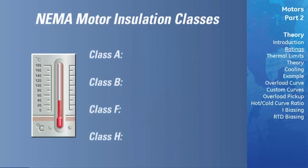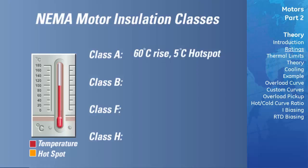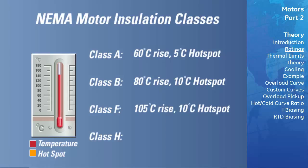The maximum temperature rise and hot spot for each class of insulation is as follows: For class A, the maximum rise is 60°C with a hot spot of 5°C. For class B, the maximum rise is 80°C with a hot spot of 10°C. For class H, the maximum rise is 125°C with a hot spot of 15°C. In the past, class F insulation was typically called for in most industrial applications, but with the ever-increasing use of variable speed AC drives and the associated heating due to harmonics, class H insulation is now more commonly specified.